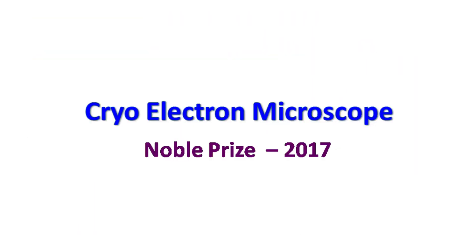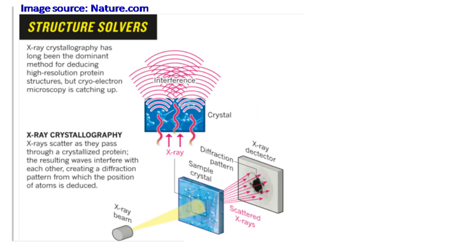Let's talk about cryo-electron microscope. X-ray diffraction have been one of the long-term dominant methods to obtain information regarding crystal structure of protein. In this method, X-rays are allowed to pass through a crystallized protein and the diffraction pattern is obtained. Using the information in the diffraction pattern, the location of each atom is deduced to obtain the protein structure.